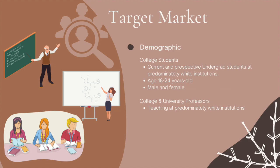Our target market occupies predominantly white institutions, also known as PWIs. Specifically, we are targeting college students and professors at four-year institutions. We are targeting prospective and current undergraduate students within the 18 to 24 age range. Typically, students who attend PWIs are socioeconomically privileged. We are targeting this market to challenge stereotyped preconceptions and to aid them in effectively communicating and working with people of diverse backgrounds. Additionally, we are targeting college and university professors at PWIs to help them become aware of their implicit biases and how they influence the achievement of their students.